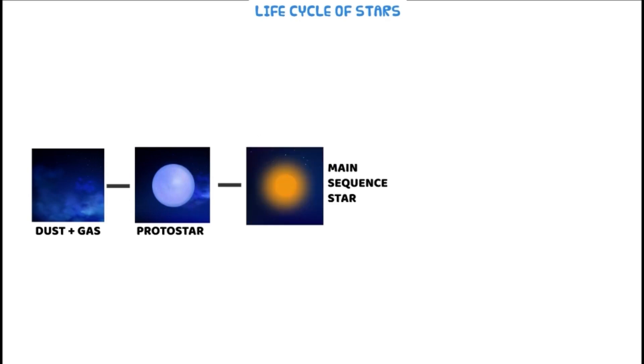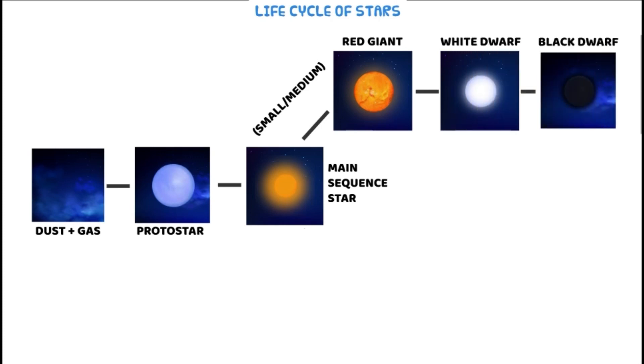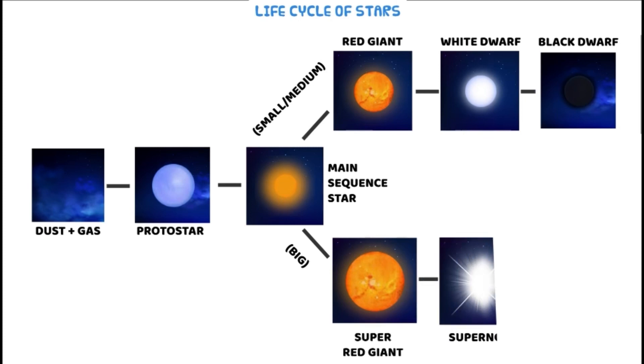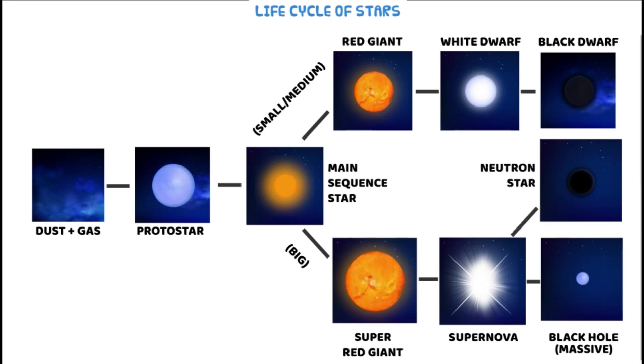So let's conclude everything. It starts off with gas and dust known as a nebula, then a protostar, then a main sequence star. For a medium star, it's a red giant, white dwarf, and a black dwarf. For a very big star, it forms a red supergiant, then a supernova, and then a black hole or a neutron star.